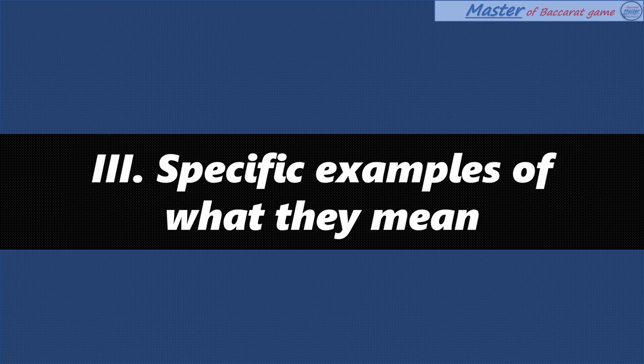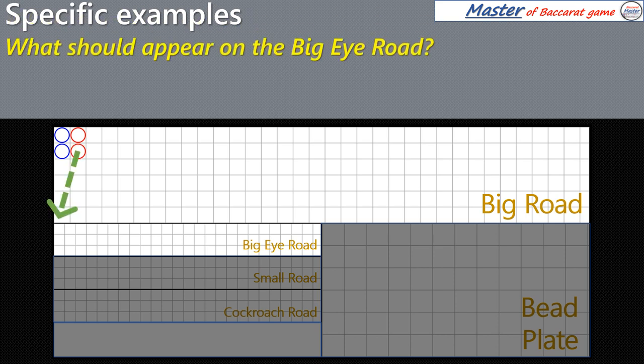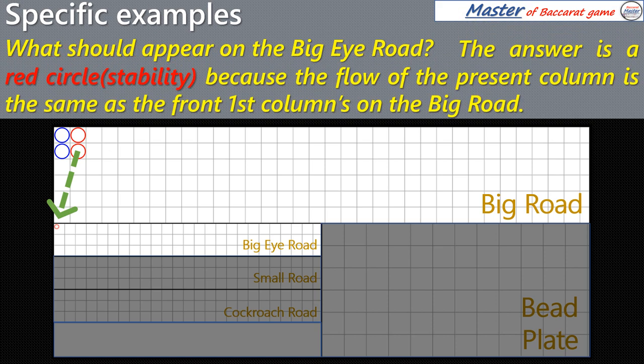Specific example: What should appear on the Big Eye Road? The answer is a red circle, because the flow of the present column is the same as the front first column's on the Big Road.